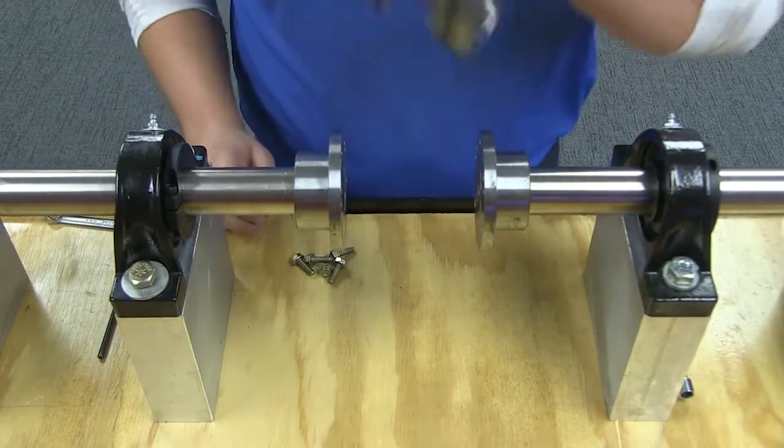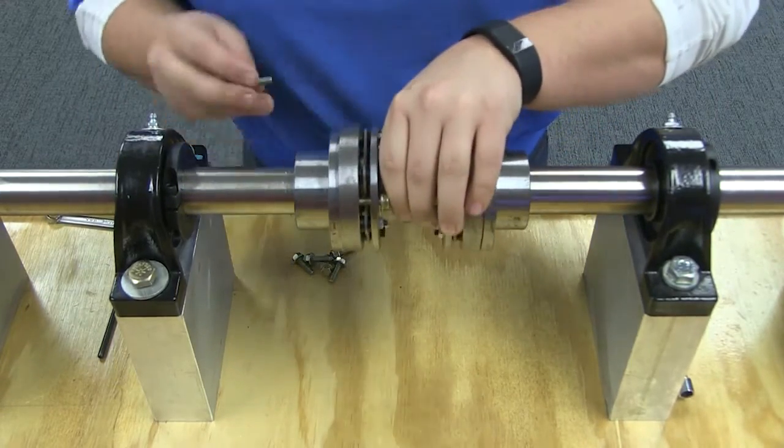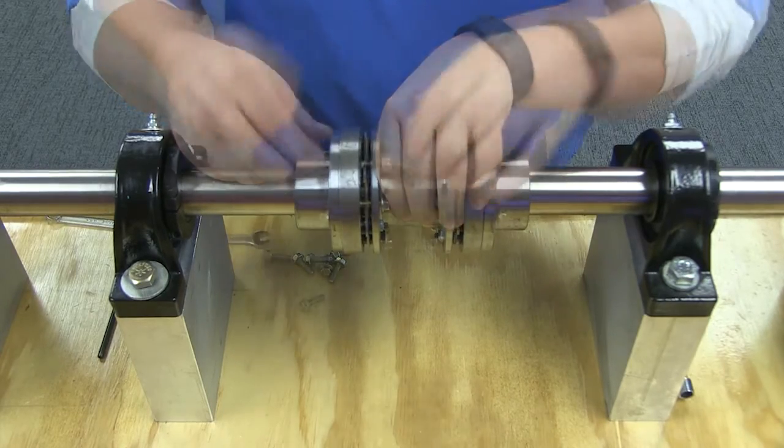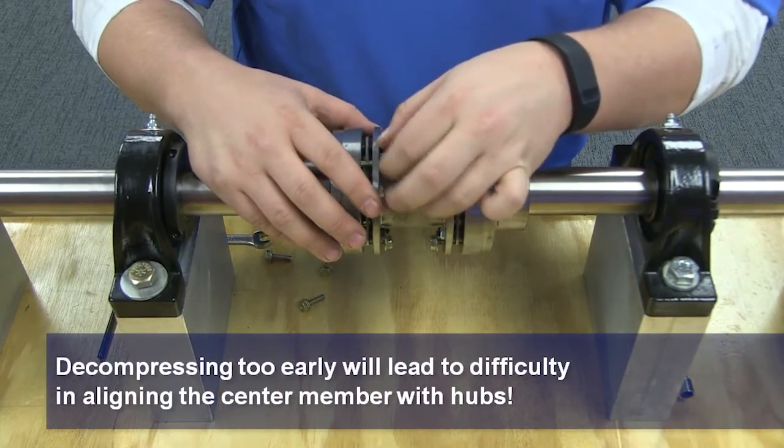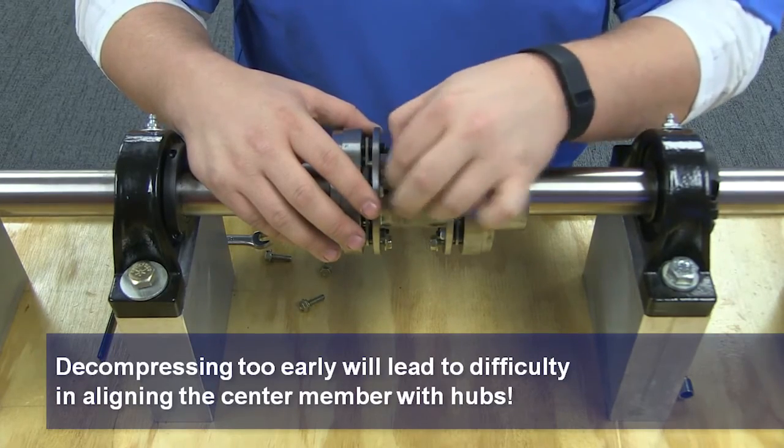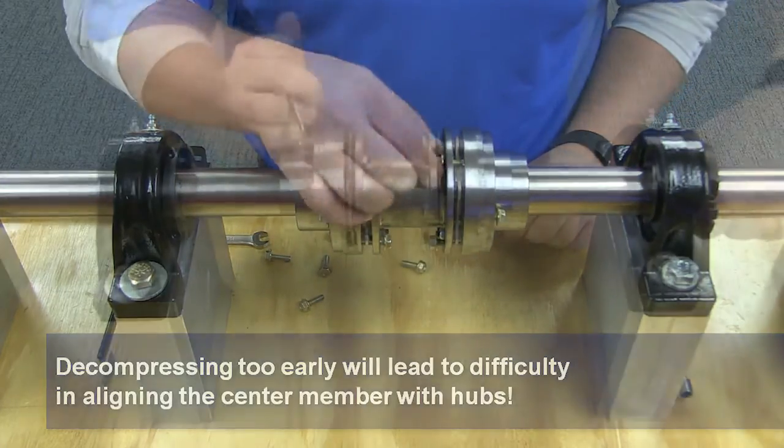Place the compressed center member between the coupling hubs, lining up the tapped holes in the adapter with the cap screw clearance holes in the hub. Remove the cap screws from the spacer flange to the adapter, allowing the hub outside diameter to make contact with the pilot diameter of the adapter.